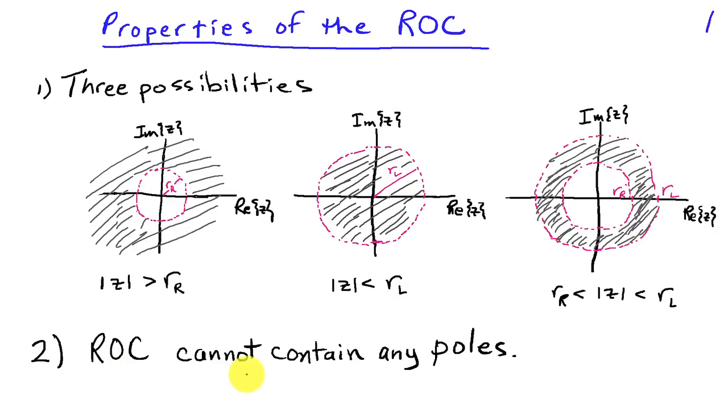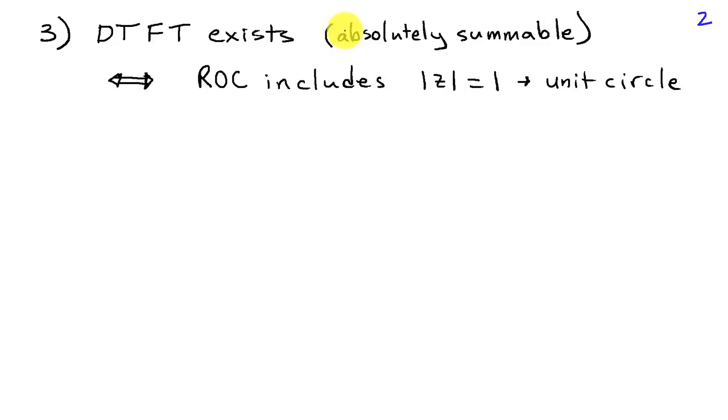The ROC cannot contain any poles because the definition of a pole is that x equals infinity at the pole, which corresponds to the Z-transform not existing. Third, if the DTFT exists, that is the expression for the discrete time Fourier transform is absolutely summable, then the ROC includes magnitude Z equals 1, that is the unit circle. And this relationship goes the other way as well. If the ROC for the Z-transform includes the unit circle, then the DTFT will exist.